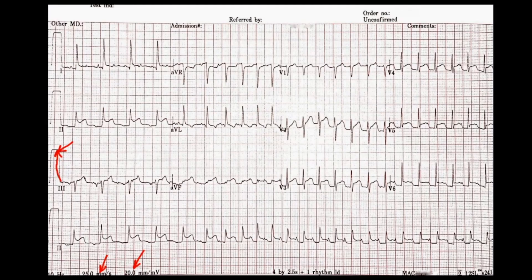The first thing we want to do is look at the rate. Just by looking at this EKG, you can tell right off the bat that the spaces between the QRS complexes at the beginning are different than at the end, so there may be a rhythm change. Any time there's this kind of irregularity, remember that this is a 10-second strip, and there are six 10-second periods in a minute.